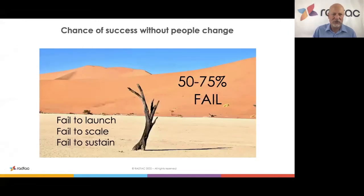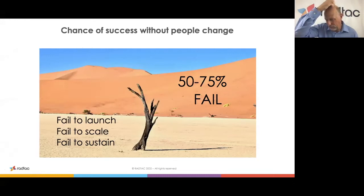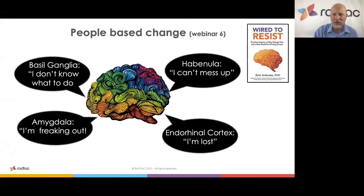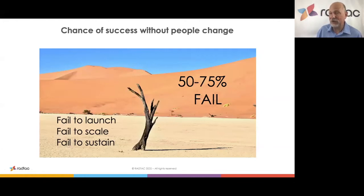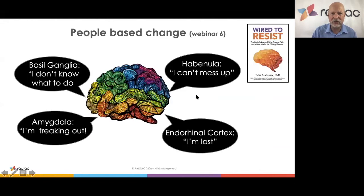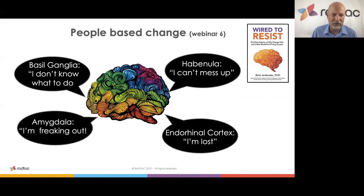On people change: analysis suggests 50 to 75 percent of transformation programs fail — from the book Wired to Resist. Most fail to launch, typically because they're trying to do too much at the same time. They fail to scale — losing control, causing the crashing change wave. They fail to sustain — typically because they haven't accounted for the culture of the organization and anchored the change in culture, as Kotter describes. Have a look at webinar six where I talked about this in more detail.